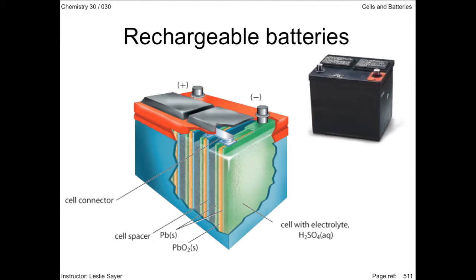As the diagram shows, lead acid batteries are made up of a series of cells with lead anode and lead dioxide cathode with a sulfuric acid electrolyte. Your textbook details the reactions that occur at each electrode.